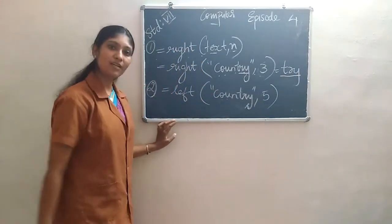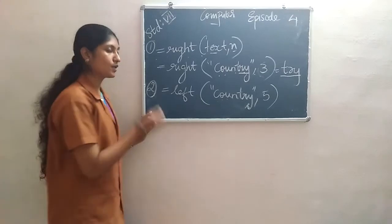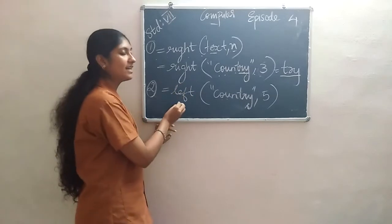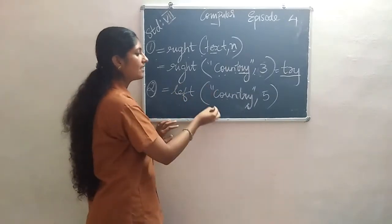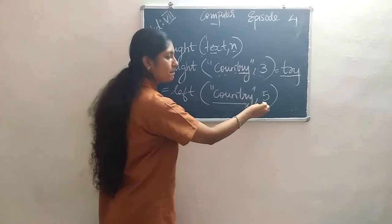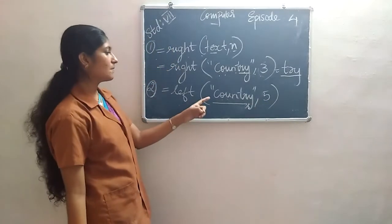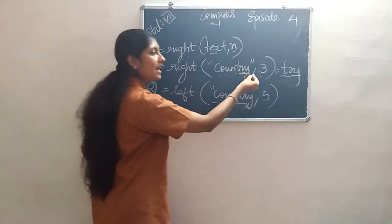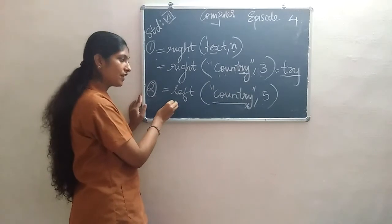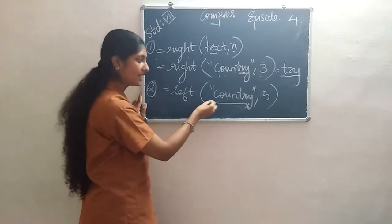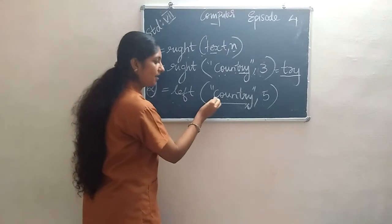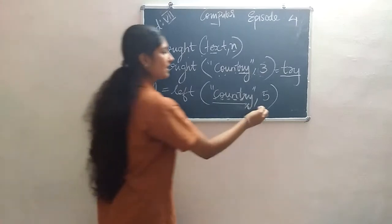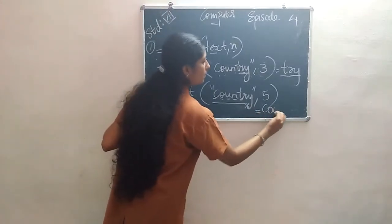Similarly, there is another function called LEFT. All functions begin with an equal-to symbol, then the function name LEFT, followed by the input argument and the number of characters. In the RIGHT function it starts from the right side, but the LEFT function starts from the left side. For example, LEFT("my country", 5) gives us the first 5 characters — 1, 2, 3, 4, 5 — so the final output is 'COUNT', spelled C-O-U-N-T.